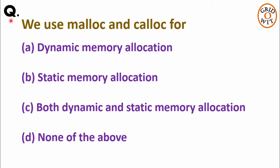Hello friends, the next question is: we are using malloc and calloc for? Four options are given: dynamic memory allocation, static memory allocation, both dynamic and static memory allocation, and option D is none of the above.